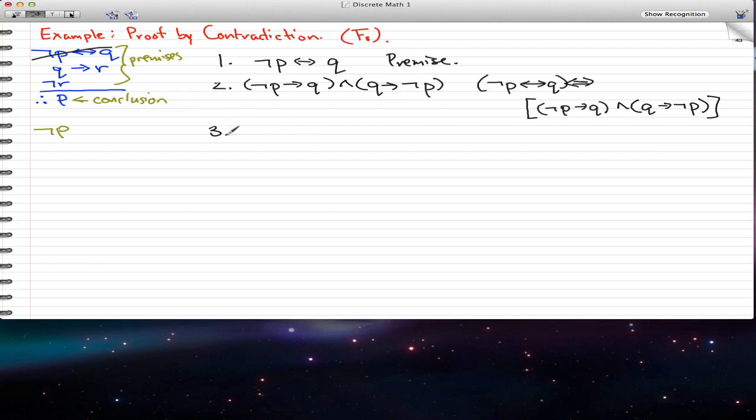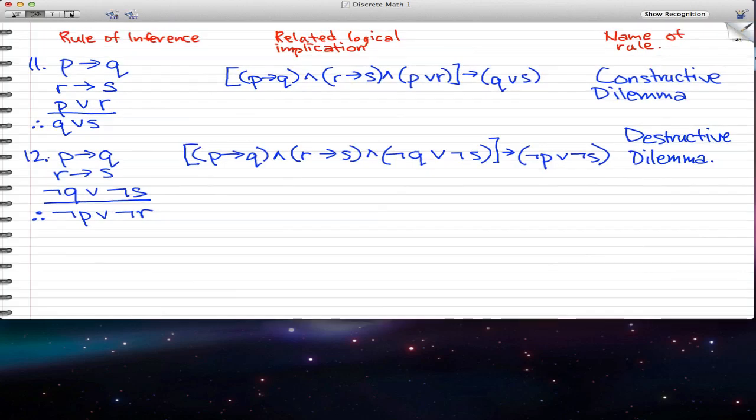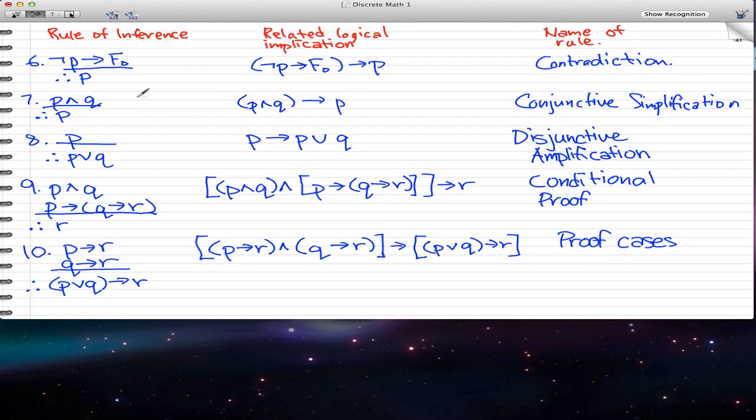So then we have our third step, and our third step is negated p implies q. This is taking step 2 and applying the rule of conjunctive simplification. This is one of those rules that I have not went through with you guys, and if we just take a look back to find it, it's this rule here, number 7.